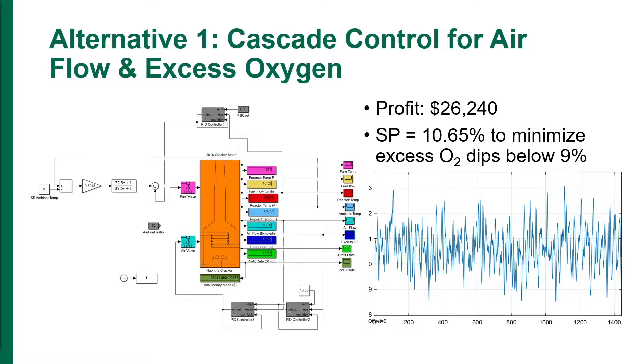While the profit was higher, the oxygen dipped below the 9% allowed value multiple times during the day. The set point had to be raised to 10.65%, but even then, the issue remained and the oxygen still dipped below 9% six times during the day.